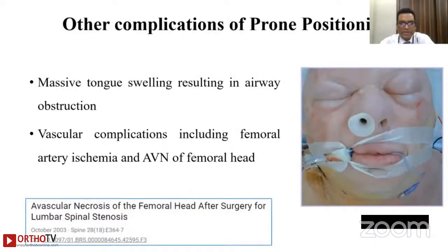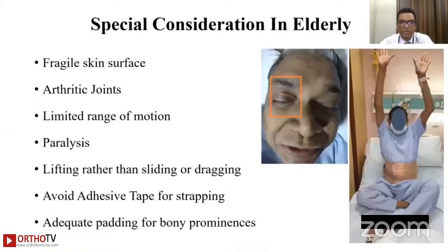Massive tongue swelling resulting in airway obstruction is one of the complications of prone position. Vascular complications, including femoral artery ischemia and avascular necrosis of the femoral head, have been reported in a few case reports.